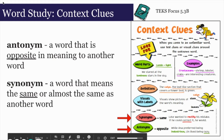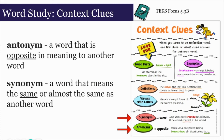For today's word study we are going to focus on antonyms and synonyms. Antonyms and synonyms are two types of context clues to help us determine the meaning of unfamiliar words. Remember, context clues are text clues or visual clues in or around an unknown word. This could include word parts or words, sentences or paragraphs that precede or follow a specific word. Antonyms are words with the opposite meaning whereas synonyms are words that have the same meaning.